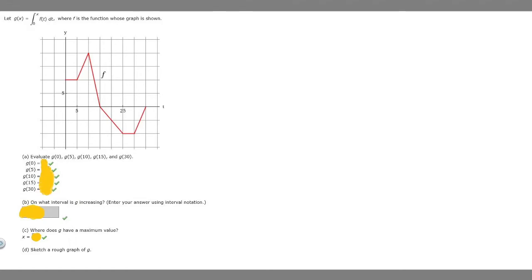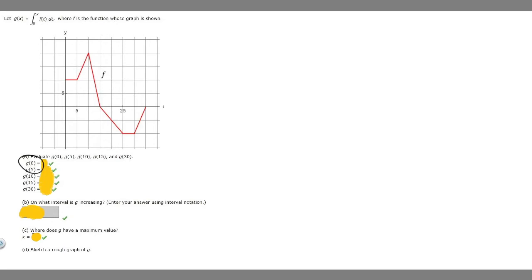In this problem we're told to let g of x equal the integral from 0 to x of f of t dt, where f is the function whose graph is shown. We're given this graph here, so let's start with part a. It says evaluate g of 0, g of 5, g of 10, g of 15, and g of 30. We want to find what g equals at each of these x values.